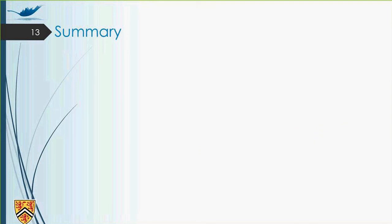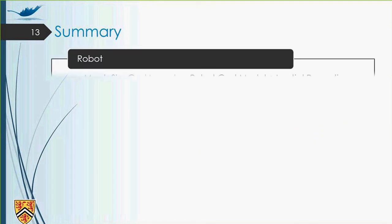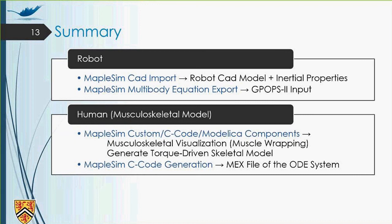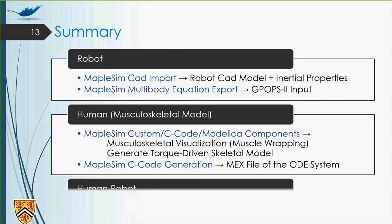So now let's summarize what we have done in MapleSim for our project. On the robot side, we used MapleSim CAD import to import the robot's CAD model with inertial properties. We used MapleSim multi-body equation export, and we provided the robot's dynamic equation to the GPOP-S2 solver, which is an NMPC solver. On the human or musculoskeletal model side, we used MapleSim custom components, C-code components, and Modelica custom components to generate musculoskeletal visualizations, muscle wrappings, and generate torque-driven skeletal models.